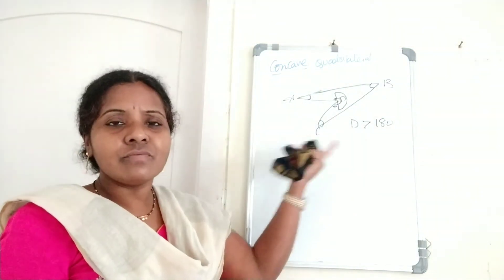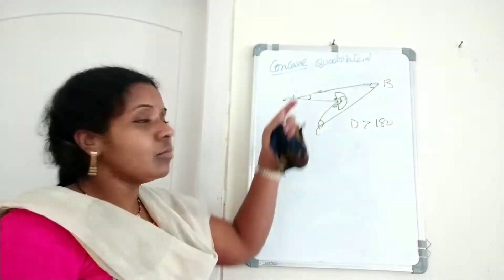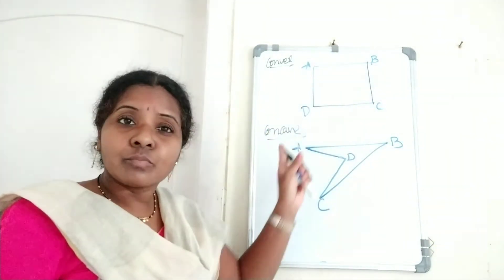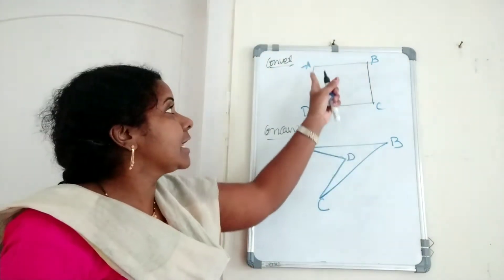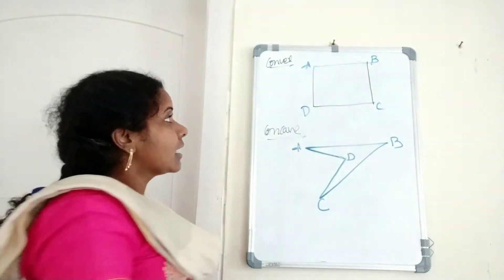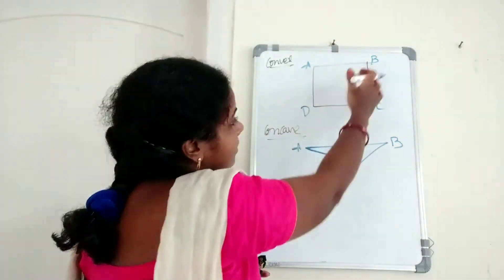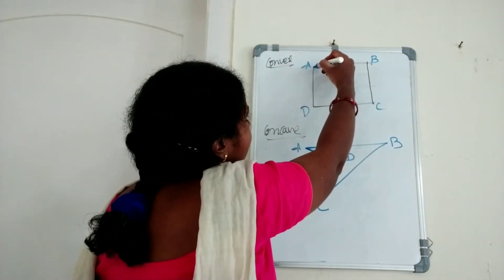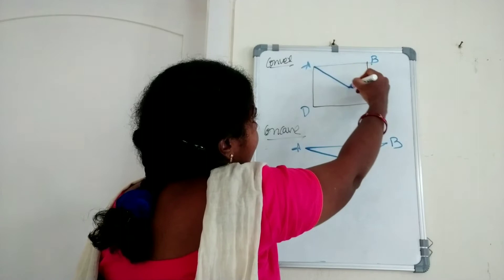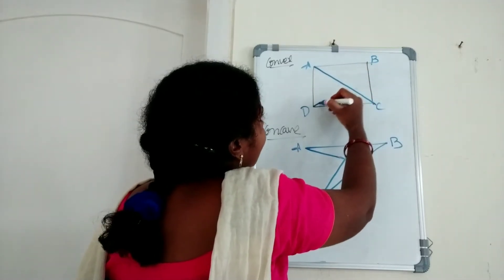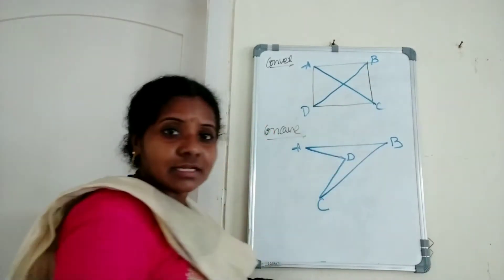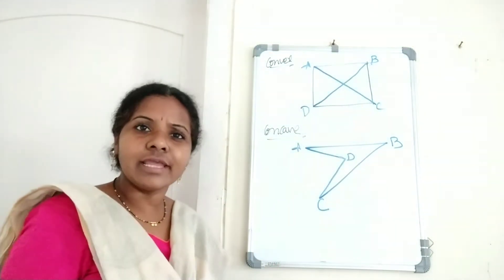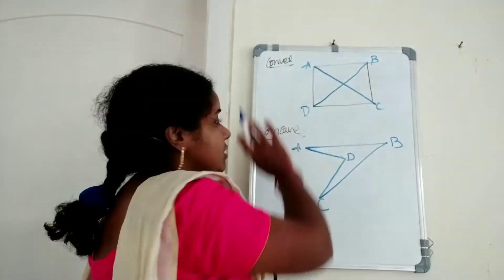Now in another way we can also describe these. In a convex quadrilateral, both the diagonals are in the interior of the quadrilateral only. Diagonals mean we join the opposite vertices — join line segments to opposite vertices. AC is one diagonal and BD is another diagonal, and both lie inside the convex quadrilateral.